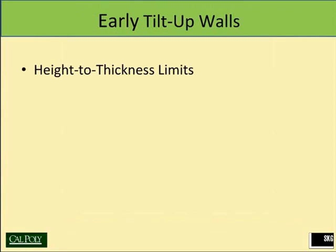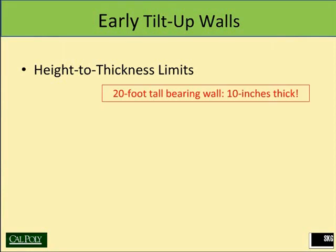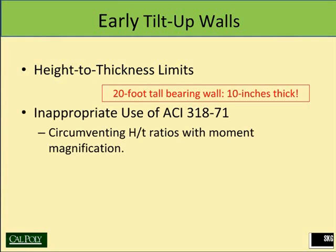The early tilt-up walls before their provisions had limits associated with the height-to-thickness ratio. The building code — both ACI and the UBC — indicated that height-to-thickness ratios were such that a 20-foot tall bearing wall was really limited to 10 inches thick, which was not very economical, though it may have been more economical than forming in place. Engineers began finding ways to work around this by using a portion of ACI that had a moment magnification factor, where you could circumvent the height-to-thickness ratios by using a moment magnification intended to account for P-delta effects or second-order effects. But this was really not the intent of that section of the code, even though it was being used for that purpose.